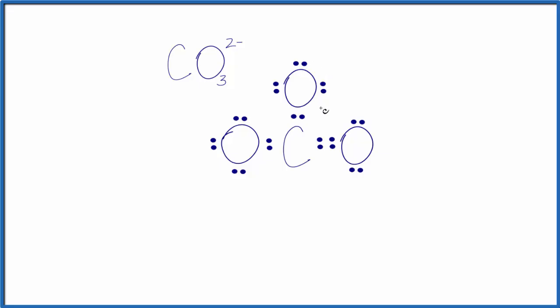We could also add the formal charges. On the oxygen here with the single bond, that's -1, and this oxygen here with the single bond has a formal charge of -1. Those both add up to -2, which makes sense. So this is one Lewis structure we could draw. When we talk about resonance, we often talk about pushing electrons to draw different resonance structures.